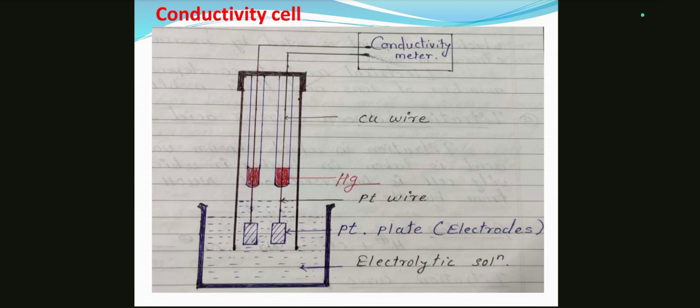platinum wire, mercury, 2 glass tubes, copper wire, and conductivity meter. So the conductivity meter is connected to 2 copper wires, and those 2 copper wires are dipped into the mercury.